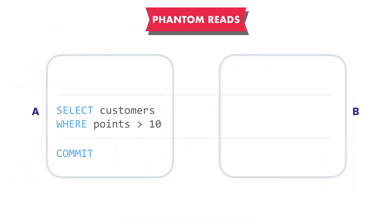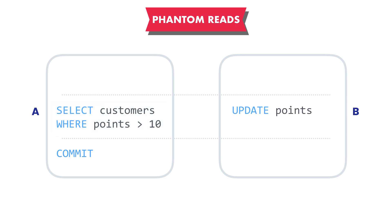The last common concurrency problem is phantom reads. Imagine in transaction A we're querying all the customers who have more than 10 points — perhaps we want to send them a special discount code. At the same time, transaction B updates the points for another customer that was not returned by our query. So this customer is now eligible for the discount code, but at the time we queried the customers table, we didn't see this customer. After transaction A completes, there is still one eligible customer that didn't receive the discount code. This is what we call a phantom read — phantom means ghost. We have data that suddenly appears like a ghost and we miss it because it gets added, updated, or removed after we execute our query.